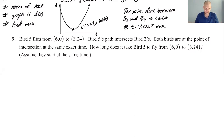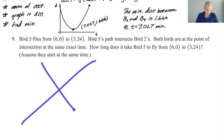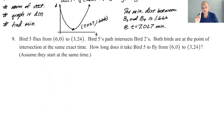Let's see if we can answer this question. Bird 5 flies from (6, 0) to (3, 24). Bird 5's path intersects Bird 2's path — the paths intersect. Both birds are at the point of intersection at the same time, and that's key because we're going to be able to use that. How long does it take Bird 5 to fly from (6, 0) to (3, 24)?